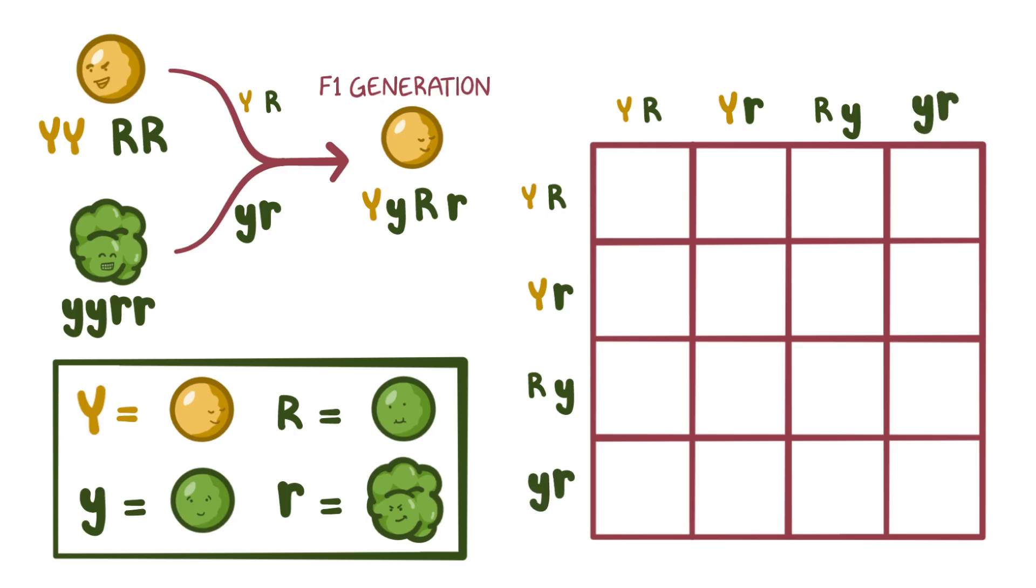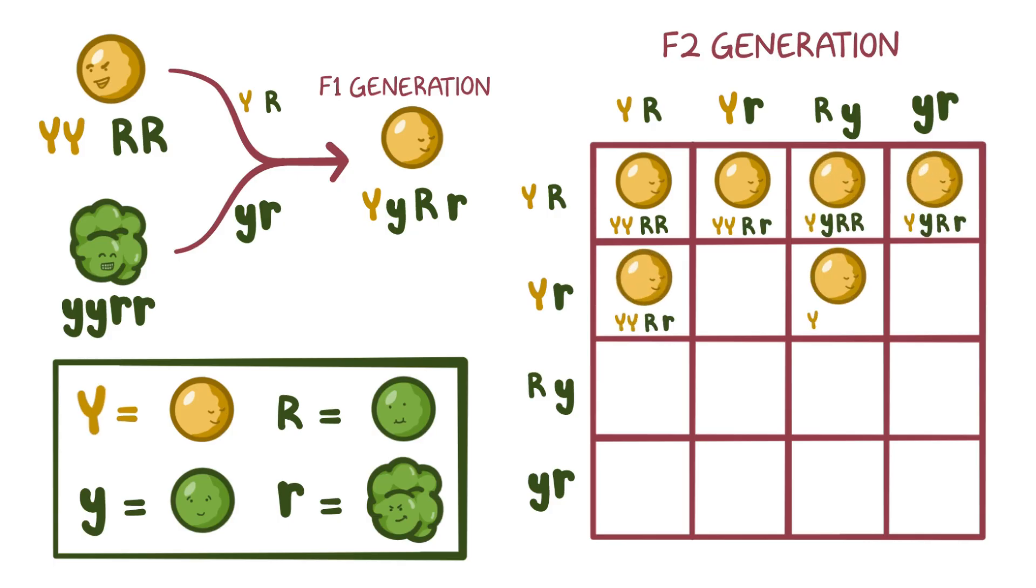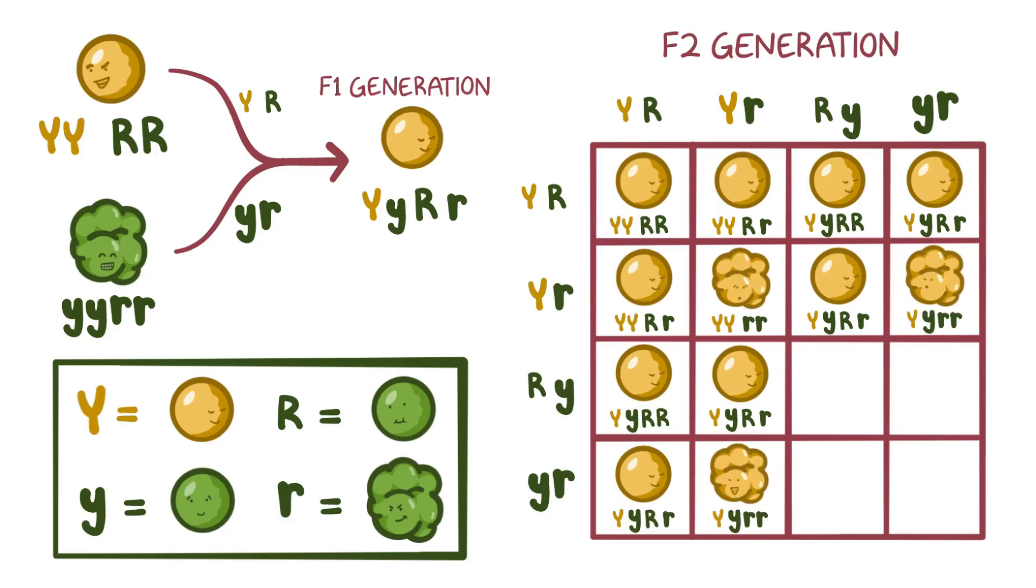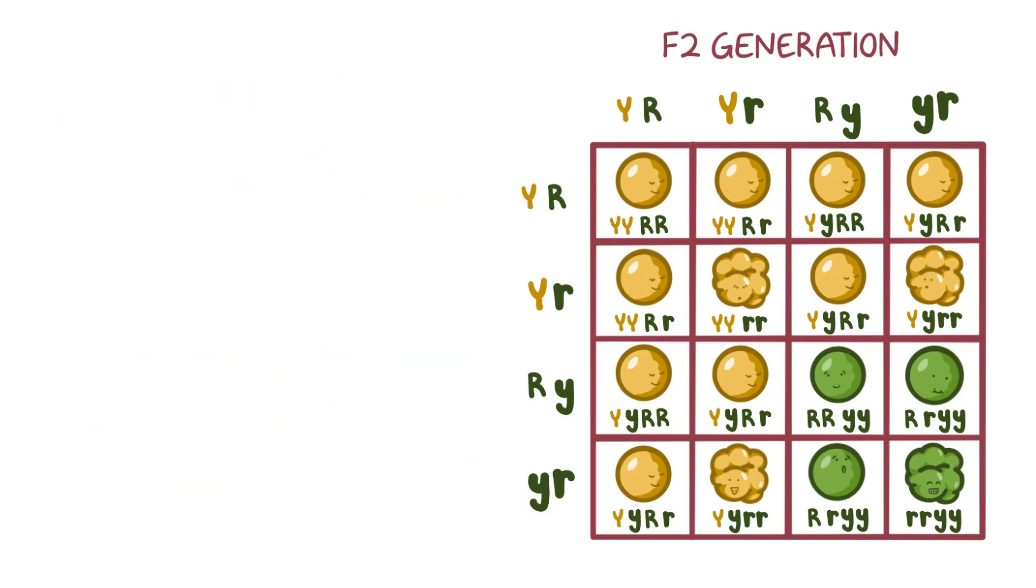When we cross-breed the plants, we can expect that the F2 generation will have seeds that have four different types of phenotypes. Nine are yellow and round, those with at least one dominant capital Y and one dominant capital R. Three are yellow and wrinkled, those that have at least one dominant capital Y and two little r's. Three are green and round, those that have two little y's and at least one dominant big R, and one that's green and wrinkled, the one that has two little y's and two little r's. And that's what Mendel got, a 9 to 3 to 3 to 1 ratio.